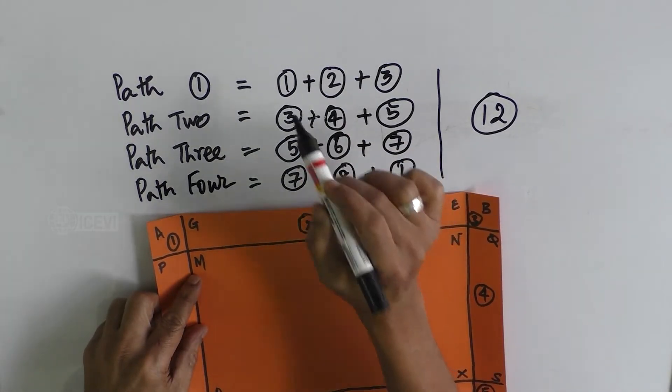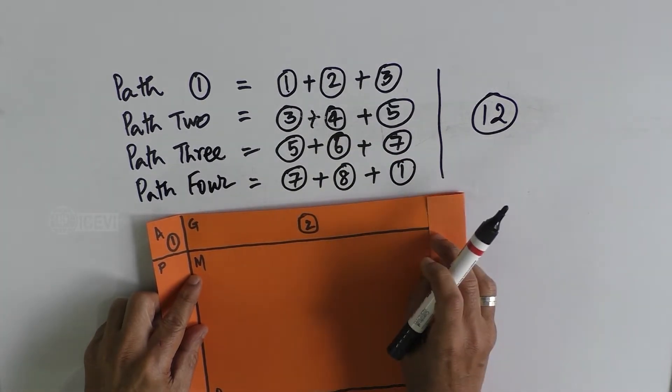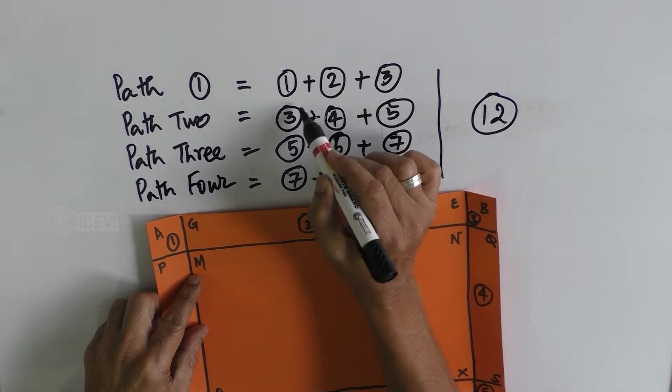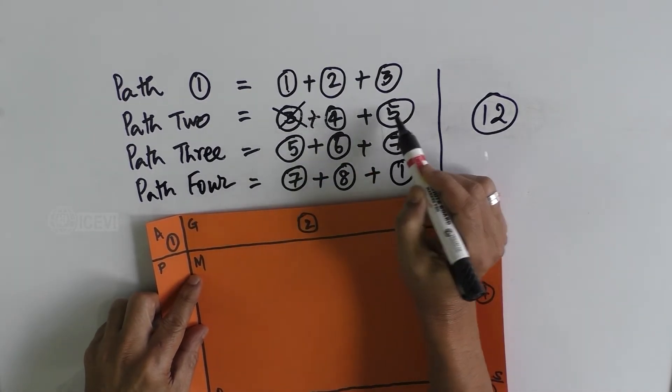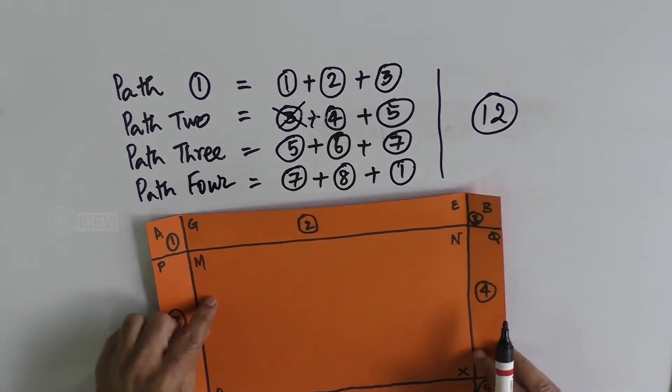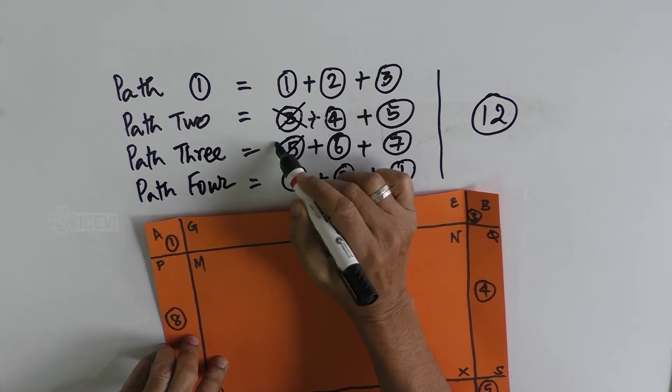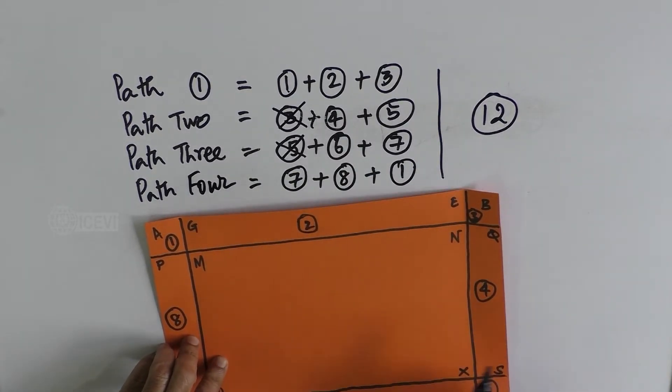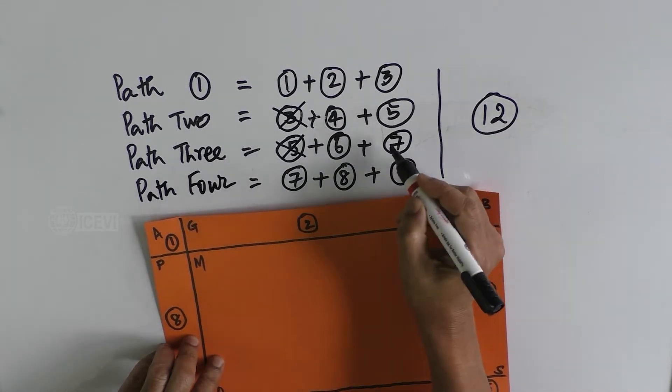Actually you have to add only eight. That means the child should understand that you start with one and two, add three, and when you add the next path you have to delete the three and start with four and five. When you go to the third path, you delete that five and start with six and seven.